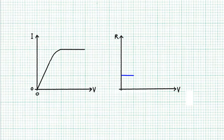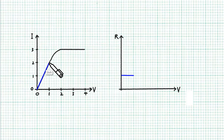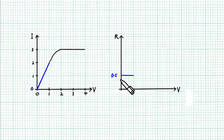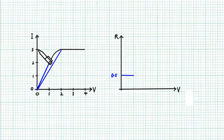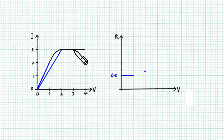If you want to be more accurate, you can actually find out the resistance values at different operating points. The resistance at this point is 1 unit of V divided by 2 units of I, so that's 0.5 units of resistance. What about here? Here we have 2 units of V divided by 3 units of I, so that makes it 2.66 — so at this operating voltage, we have 0.66 units of resistance.